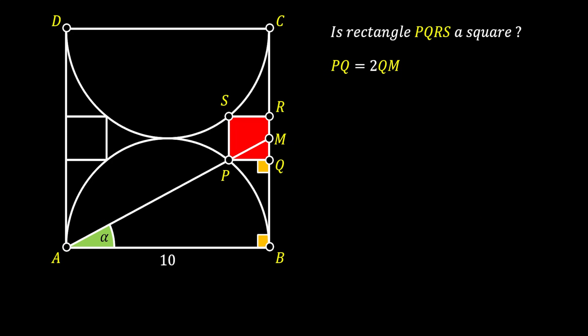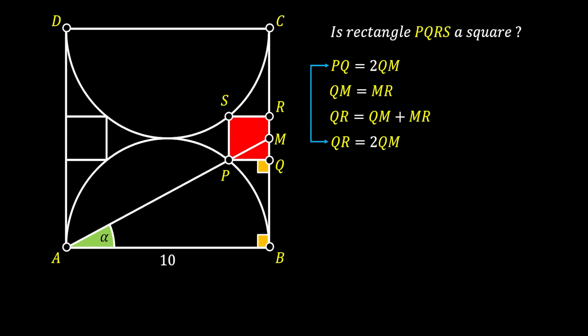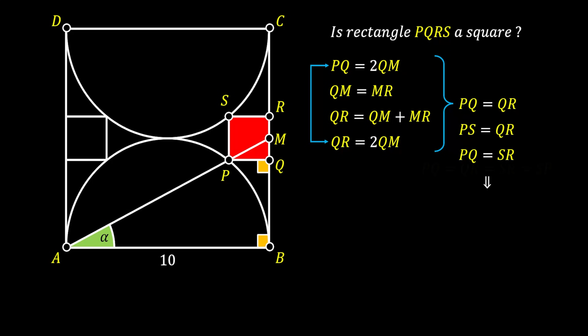Now, let's go back and take a look at our rectangle PQRS. The side QM must be equal to side MR, since M is the midpoint. Next, we know that QR consists of segments QM and MR, which means that QR must have the value of 2 times QM. So, since both PQ and QR have the same value, those two sides must be identical. Furthermore, we know that the sides PS and QR are the same, since PQRS is a rectangle. And due to the same fact, we know that the sides PQ and SR are identical as well. From this, we can easily conclude that all sides of our rectangle are identical.